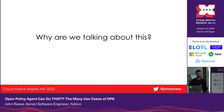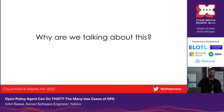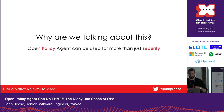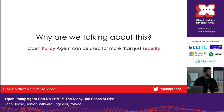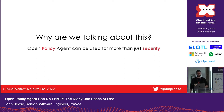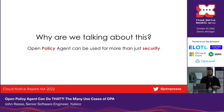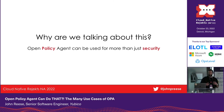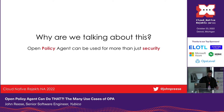First and foremost, I wanted to touch on why we're talking about this. For me, it's because the Open Policy Agent can be used for more than just security. I've seen a lot of literature and talks in the ecosystem where the topic of OPA generally comes up around security — protecting microservices and authorization concerns. But OPA can be used for so much more than that.